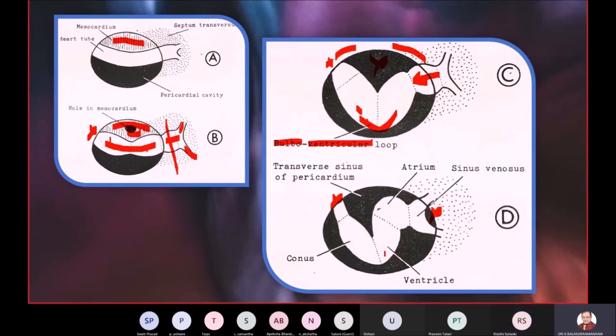Next, once the loop is formed, you can reestablish the locations of the bulbus cordis. This part is called the conus and the part here behind is the ventricle. You can see almost the whole of the atrium has got into the pericardial cavity. Not only the atrium, in item D, you can see it has pulled in some amount of the sinus venosus also. Finally, the atrium and the sinus venosus together, the developing atrium and sinus venosus together, they form the final atrium.